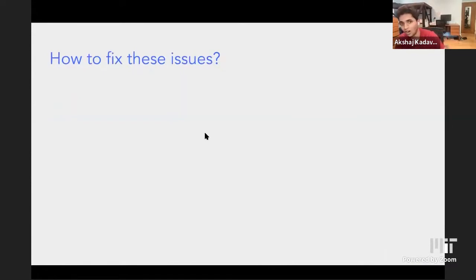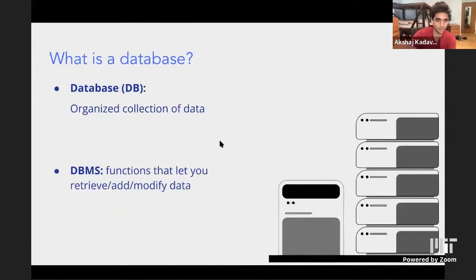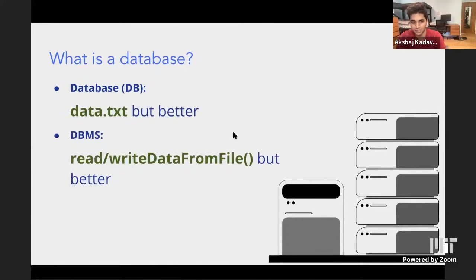So now we have to think about fixes to all of these issues. Rather than try to fix them ourselves, they've already all been solved for us — someone already thought of all these problems and made a better text file. These are called databases. You can think of a database as just a better data.txt, a better place to put your data, where it handles things like speed, concurrency, and storage. It's like a warehouse — a place to store all your stuff.